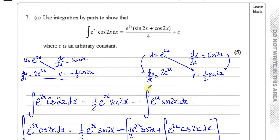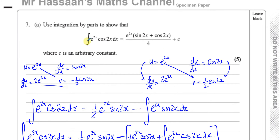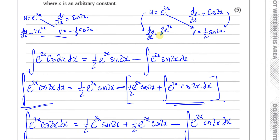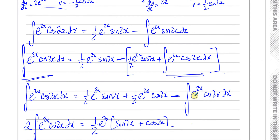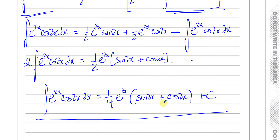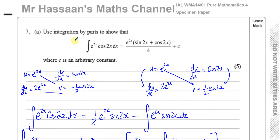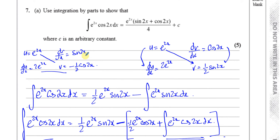Whenever you see integration by parts where nothing breaks down, just carry on as normal until you get the same integral on both sides, then bring them together and express your answer. Now I'm going to go through the same question again, taking u = cos(2x) and dv/dx = e^(2x), just to show it gives the same result.